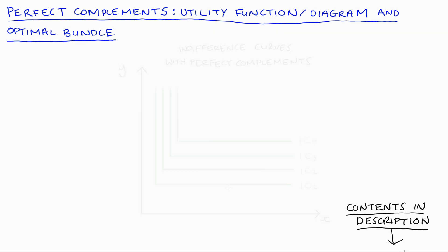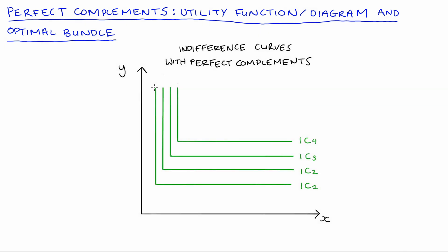This is how indifference curves for perfect complements look. They are L-shaped, they go from vertical to horizontal, and there's just one point, a corner point where we get a sharp change in the direction of the curve. Now these sorts of indifference curves are appropriate when our consumers are consuming the goods that they're interested in in very specific proportions.